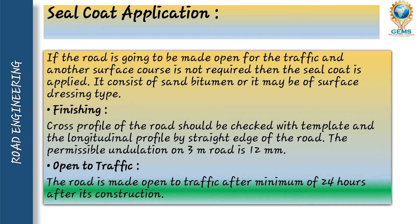Finishing: the cross profile of the road should be checked with templates and the longitudinal profile by straight-edging. The permissible undulation on a 3-meter length is 12 mm — meaning an undulation of 12 mm in 3 meters is acceptable, but more than that is not. During construction, we should provide good camber and check the layer profile of different layers. Site supervision should be taken care of so that there is no problem or undulation on the surface.